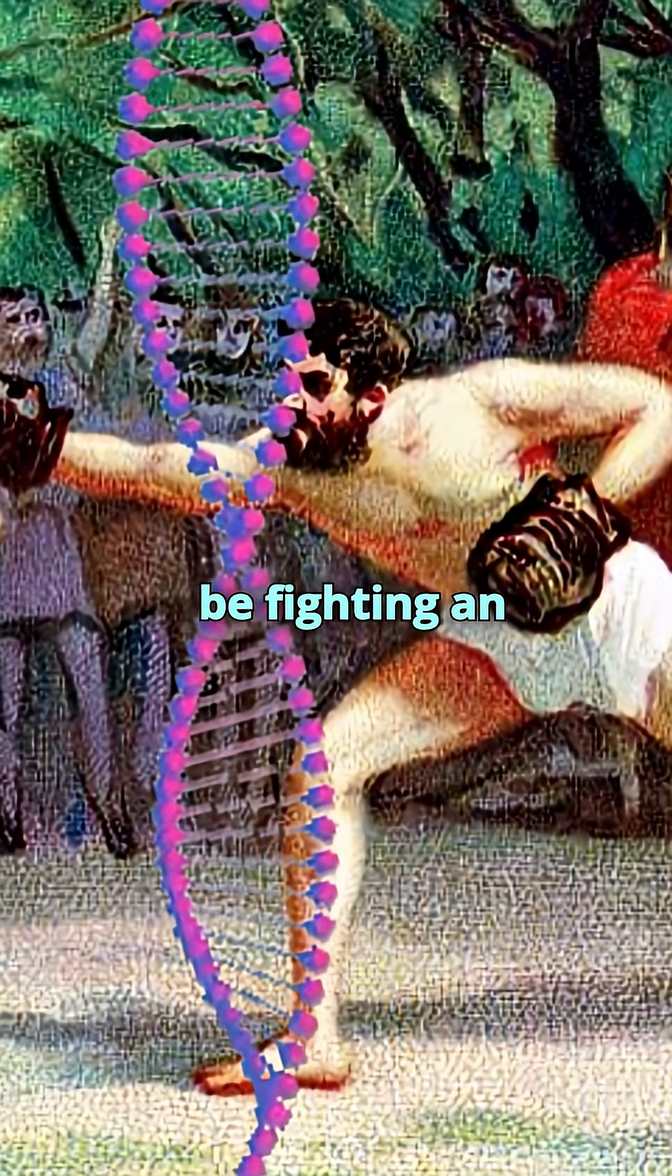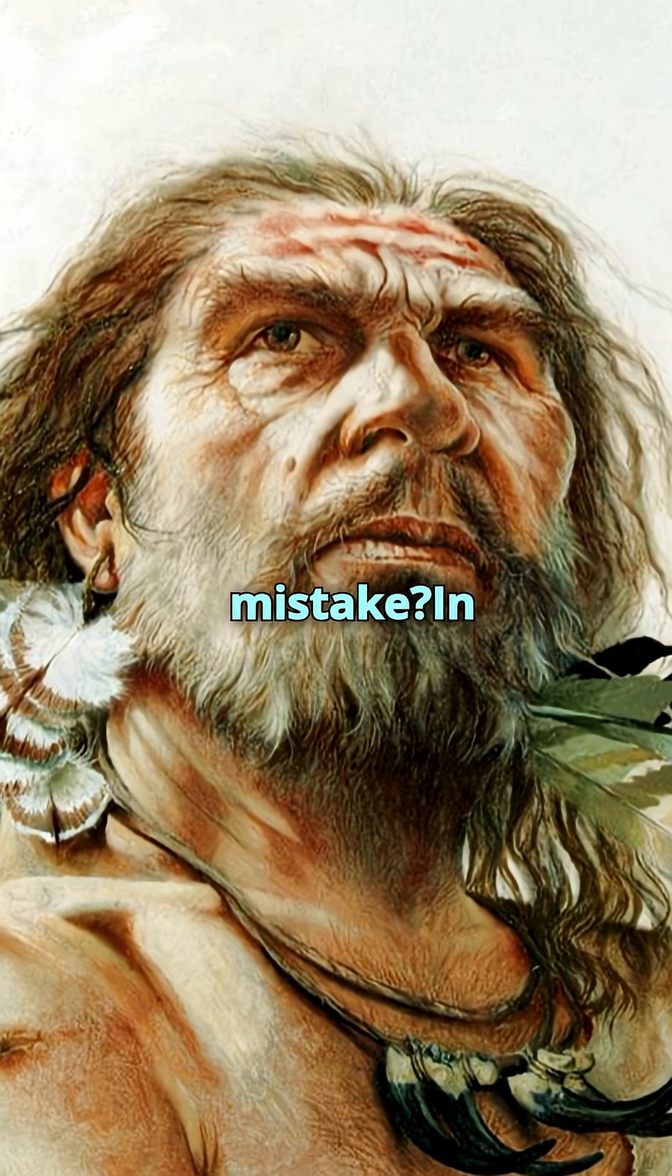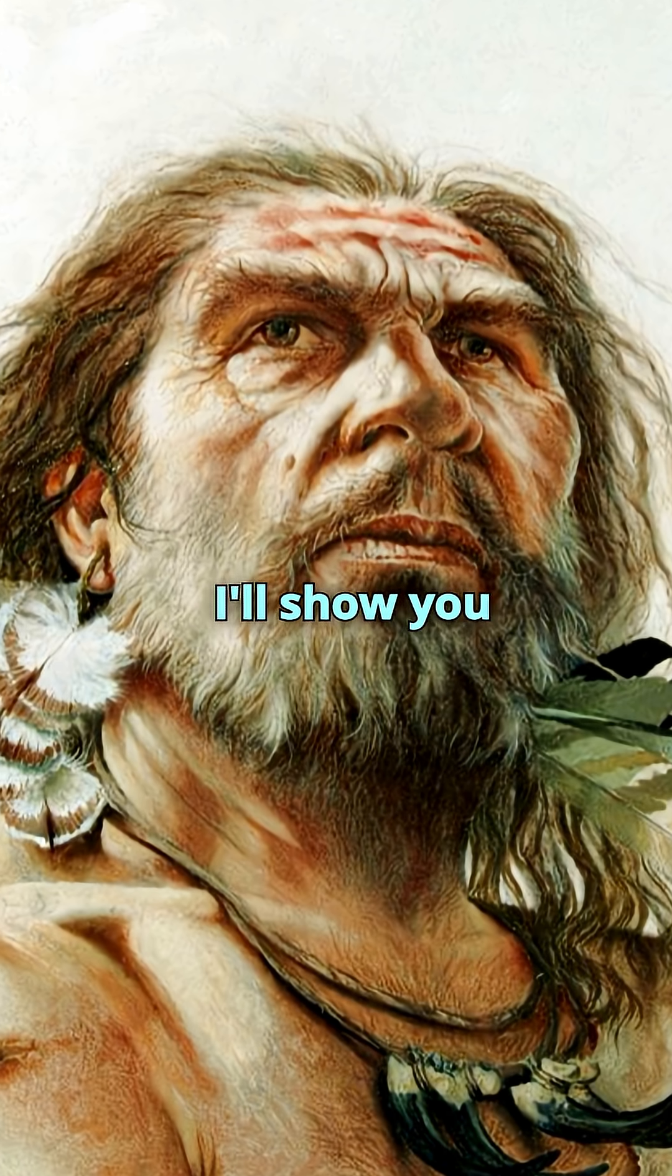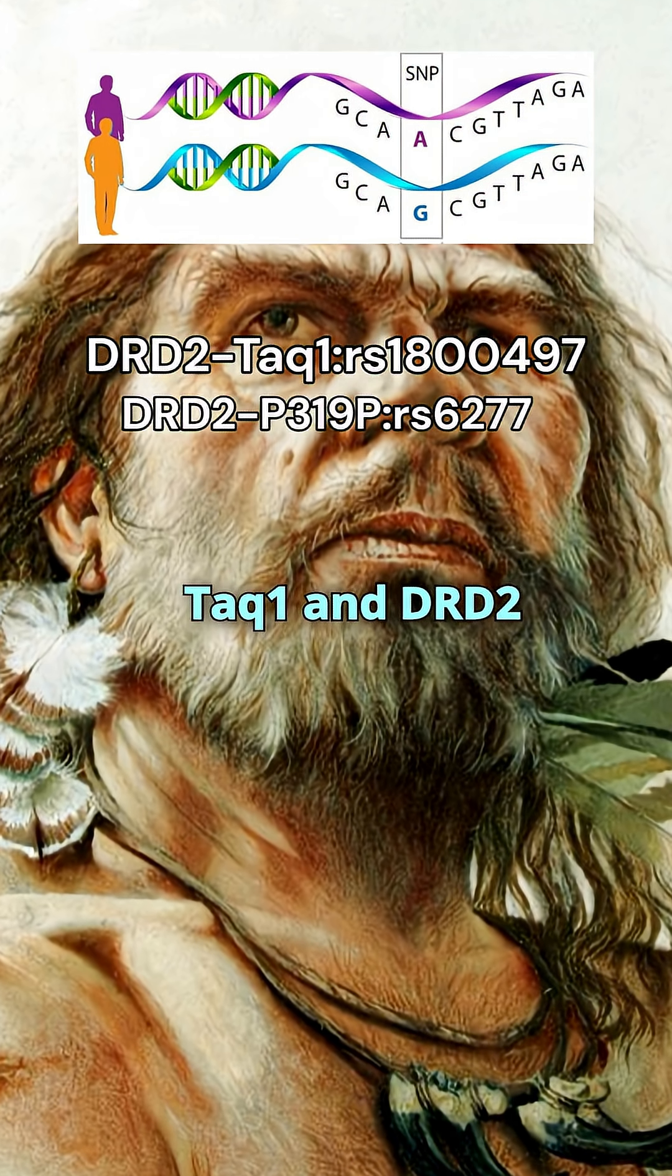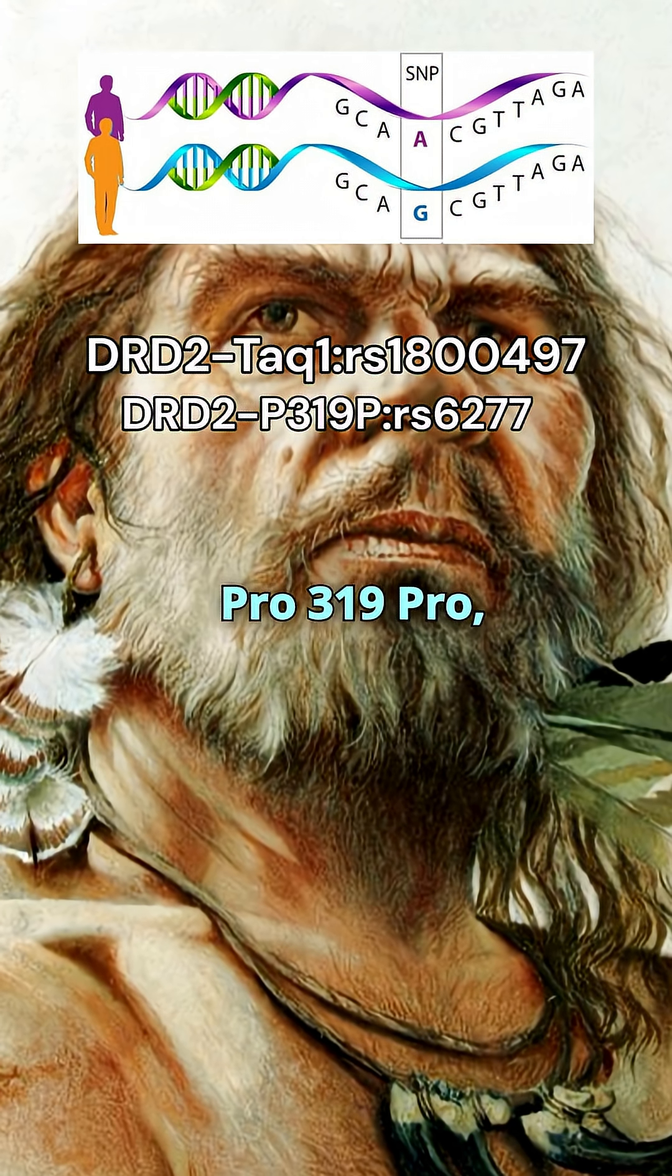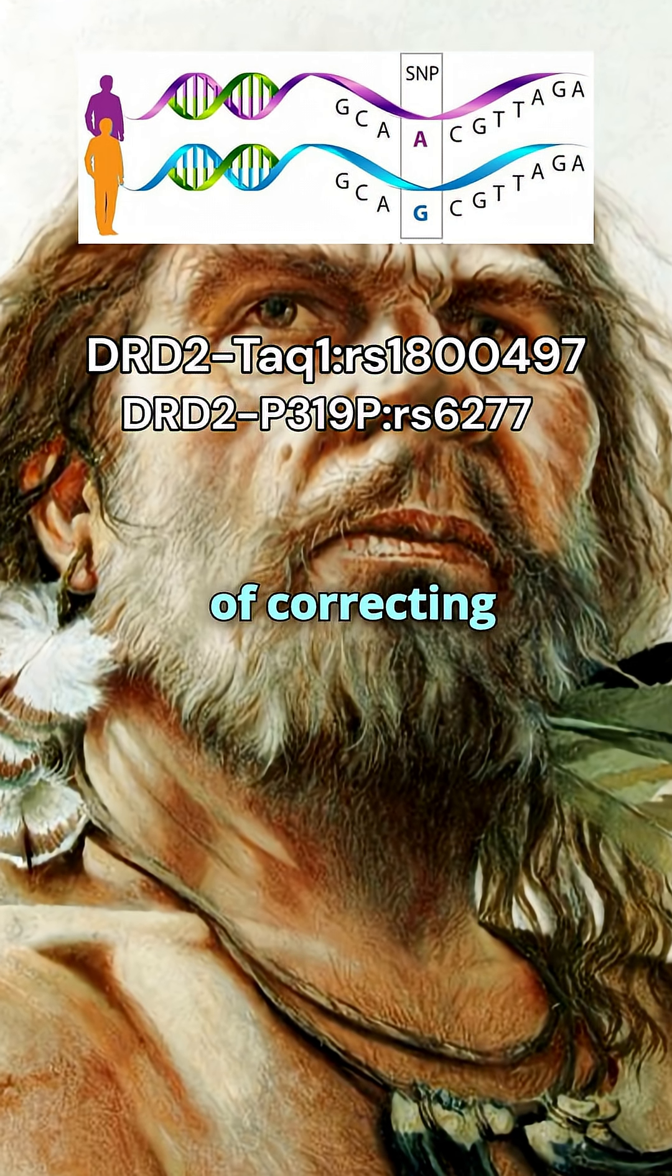Did you know your DNA might be fighting an ancient evolutionary mistake? In this video, I'll show you how two genetic variants, DRD2-TAC1 and DRD2-PRO-319-PRO, might represent nature's way of correcting itself.